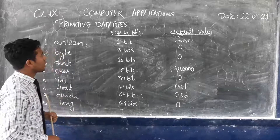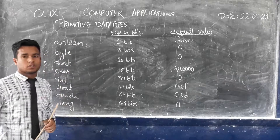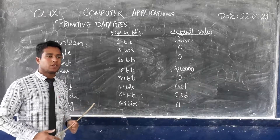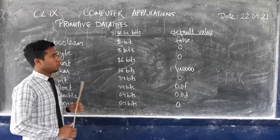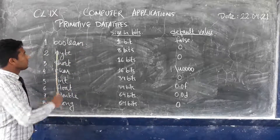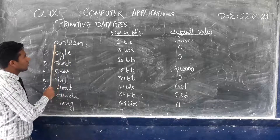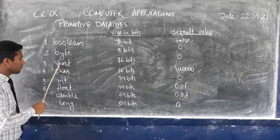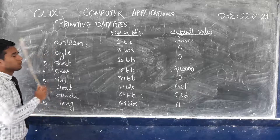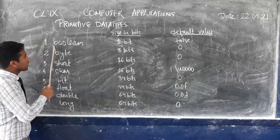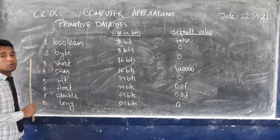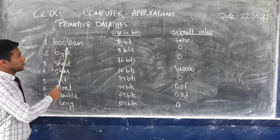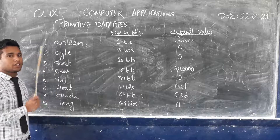Java has provided eight different types of primitive data types. If you check — byte, short, int, float, double, long — all the data types have their first character in lowercase. So starting with a lowercase letter indicates that it is a primitive data type used in Java.